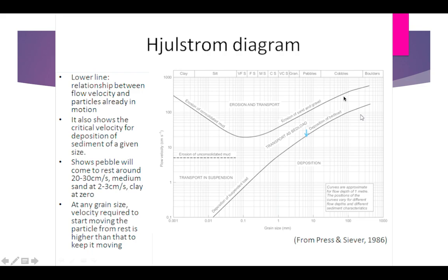For example, suppose cobble is here. The velocity to keep it moving is more than the velocity of deposition. For deposition, velocity is 100 cm/s, but for keeping it moving, the velocity required is more than 100. That's the fourth line here. For deposition we need less velocity.